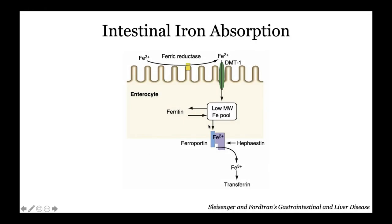Looking at intestinal iron absorption: from the luminal side of the enterocyte, ferric iron — the oxidized form — becomes reduced on the brush border by ferric reductase. The reduced iron is absorbed and can be stored in the enterocyte. One way to get rid of iron is by shedding the enterocyte, where ferritin goes with it. Then through a transporter called ferroportin, iron is absorbed into the portal circulation and finally into the liver.